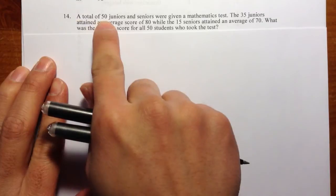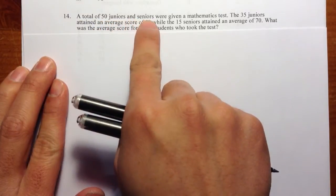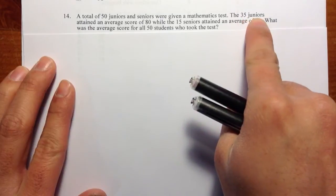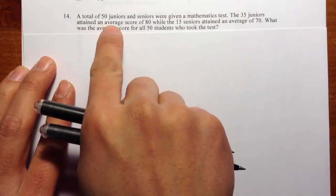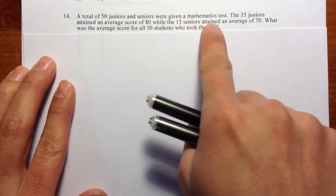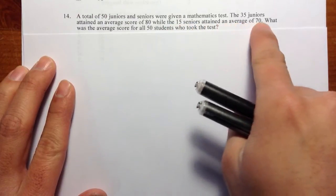So a total of 50 juniors and seniors were given a math test. The 35 juniors attained an average score of 80, while the 15 seniors attained an average of 70.